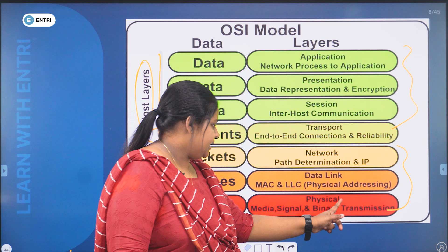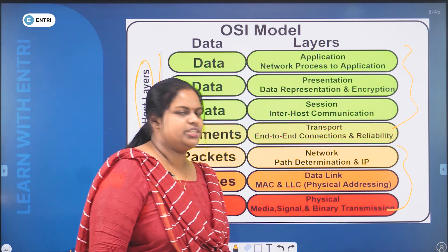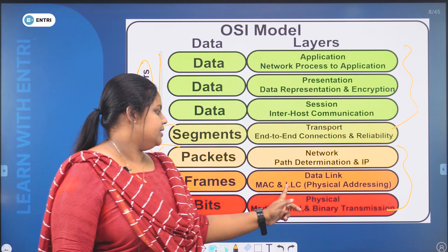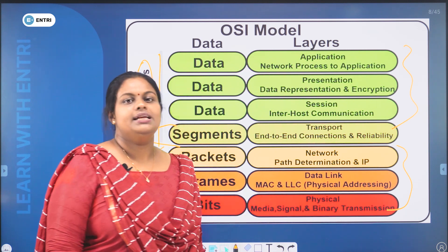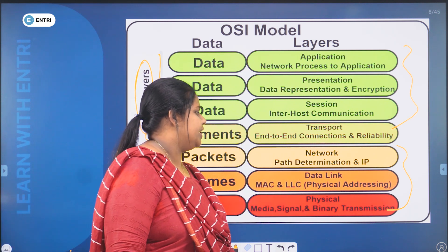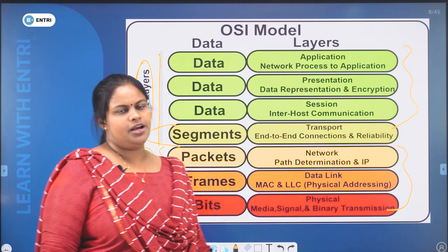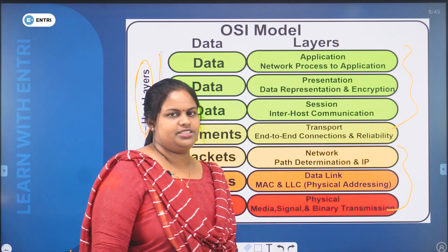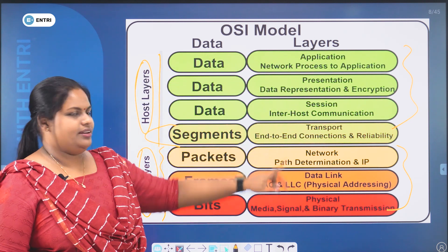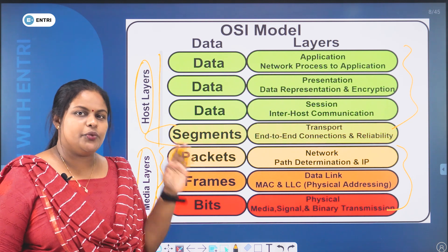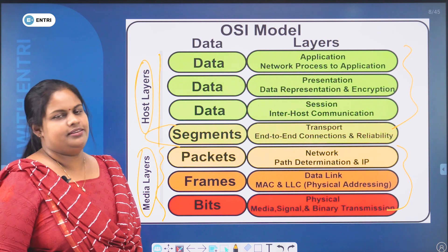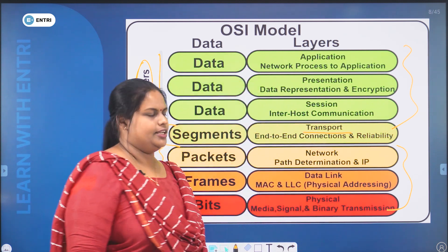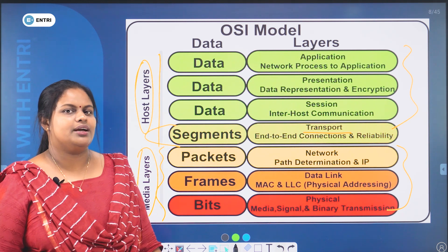The physical layer deals with media, signal, binary transmission. The data link layer deals with MAC, LLC, and physical addressing. The network layer handles path determination and IP. The transport layer handles end-to-end connections and reliability — end-to-end, process-to-process, point-to-point communication.